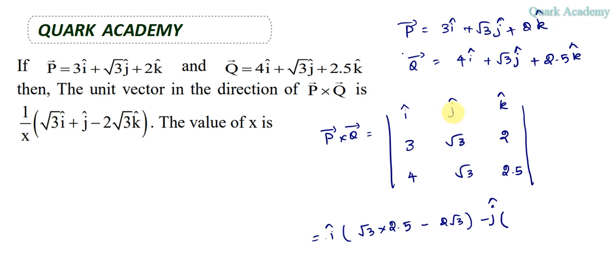So we have to multiply this one and this one, subtract it with the product of these two. So it will be 7.5 minus 8.